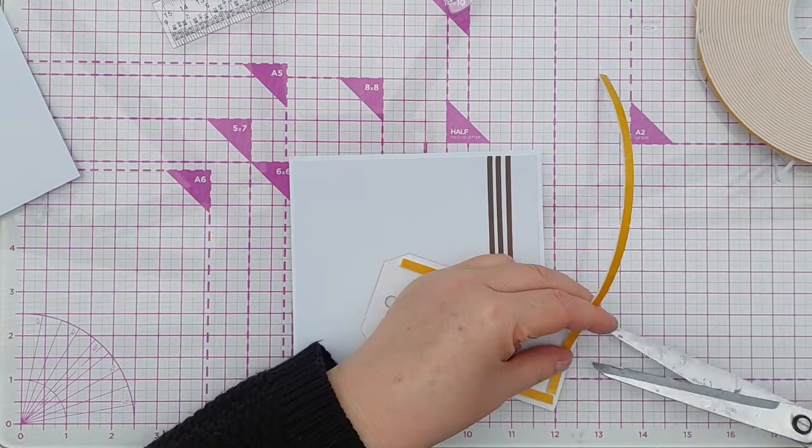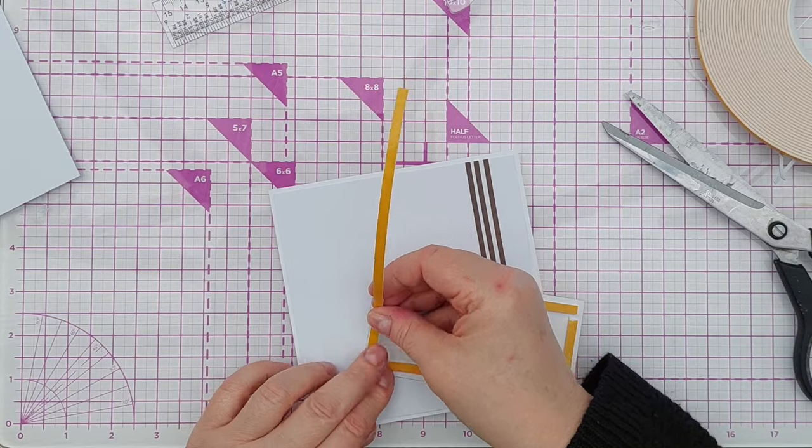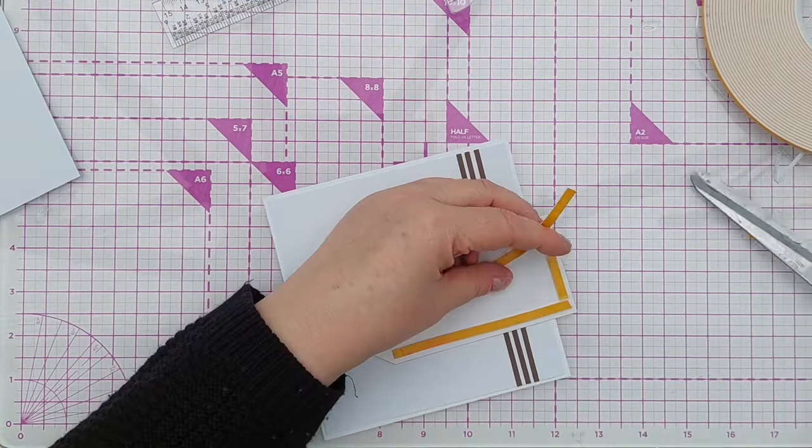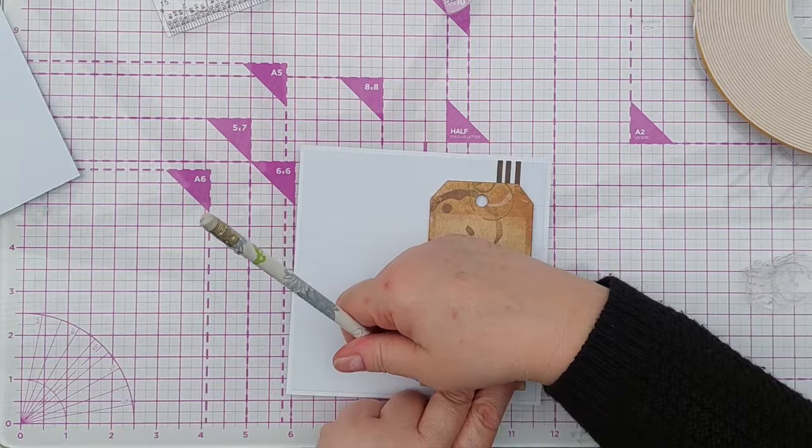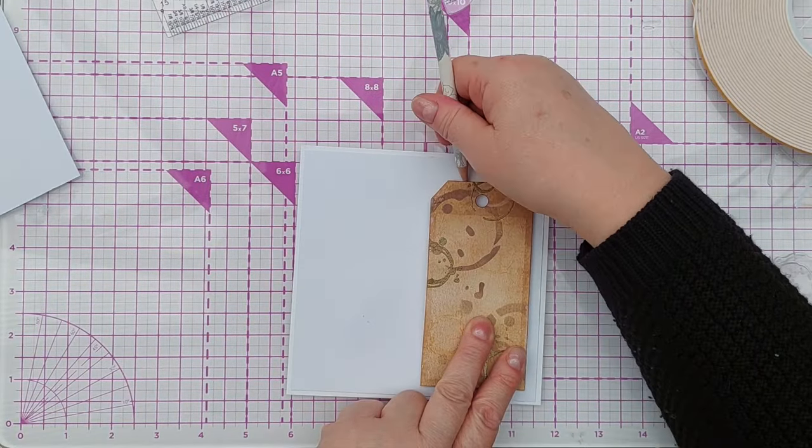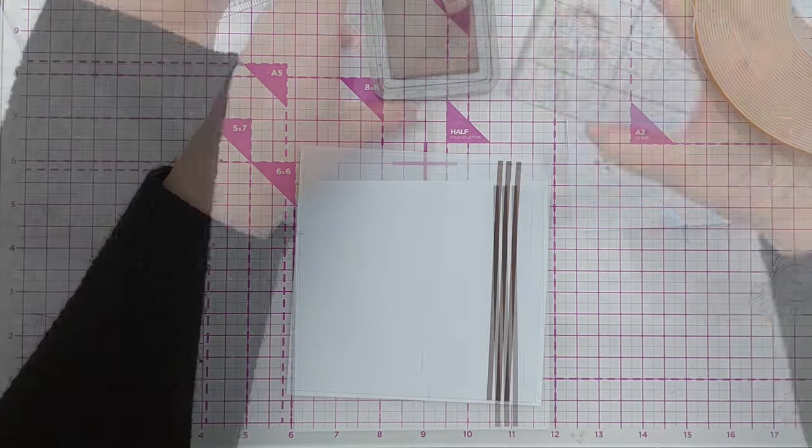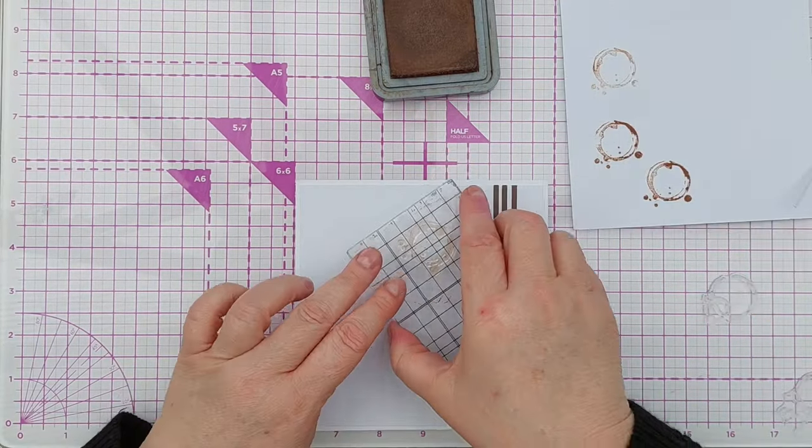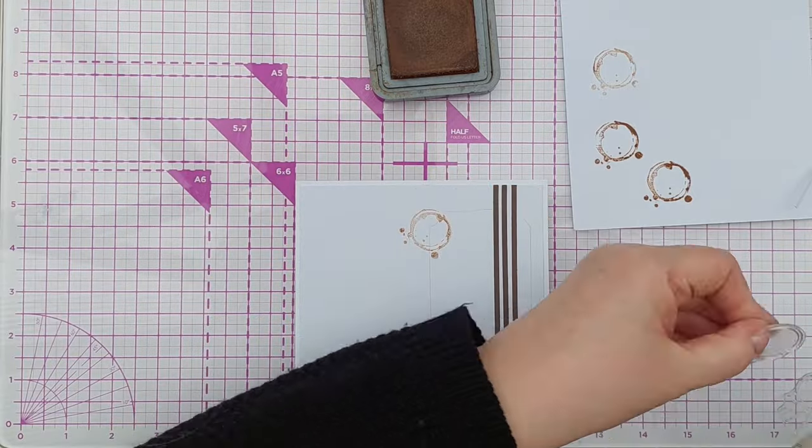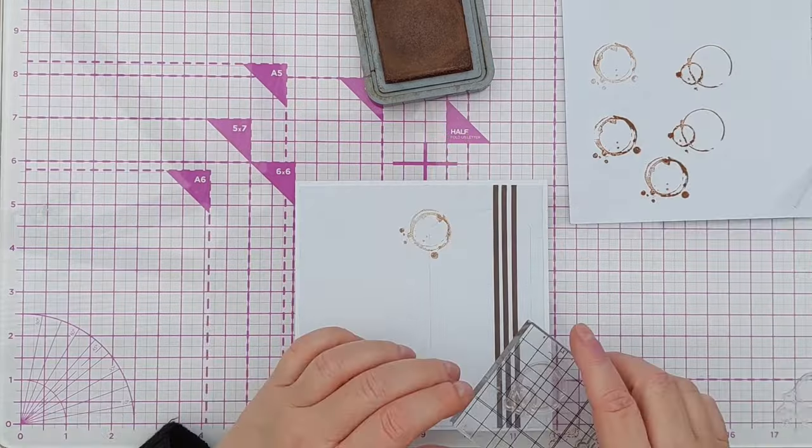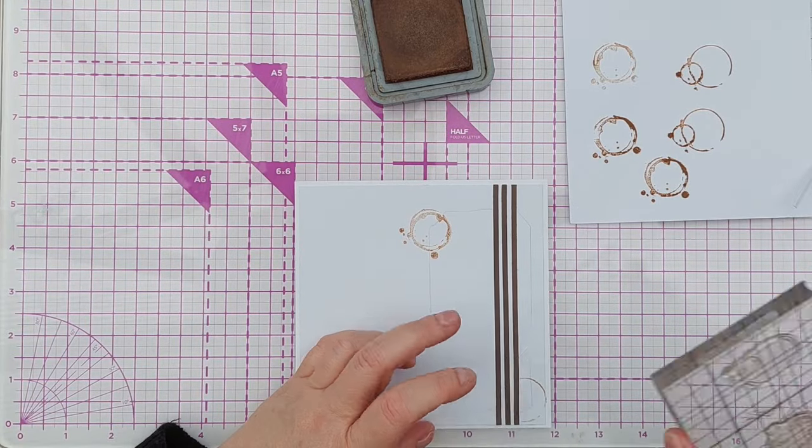I knew that I wanted to pop my card up on foam tape to give it a bit of dimension, but before I stuck it down I drew around the tag in pencil so I knew where it was going to sit. And then I did some second generation stamping with those same stamps I used earlier and vintage photo distress oxide. So I inked up the stamp, stamped it down on a spare piece of paper to the side, and then stamped it onto my card front so that they were sticking out from behind the tag.